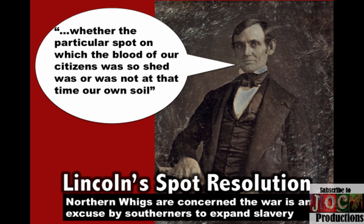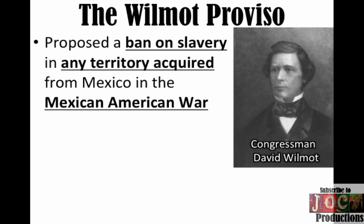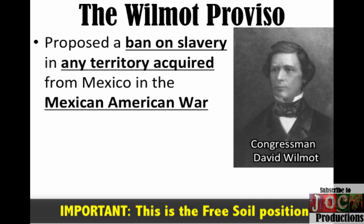Lincoln, of course, introduces his Spot Resolution where he basically says: show us where the spot was where American blood was spilled on American soil. They doubted very much that that is actually what happened. And what you see is a congressman by the name of David Wilmot, a Democrat, who basically says three months into the war — the war's not even over — he introduces the Wilmot Proviso. In it, he basically says: any territory that we acquire as a result of the war with Mexico, we are going to ban slavery in it. Slavery in any territory from this war is not going to be allowed.